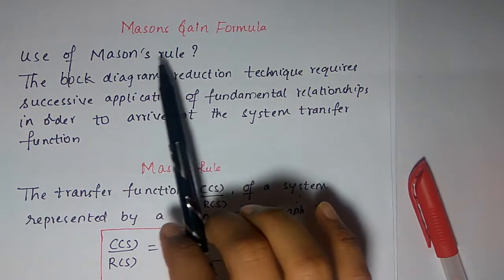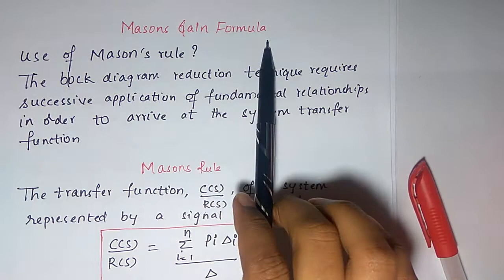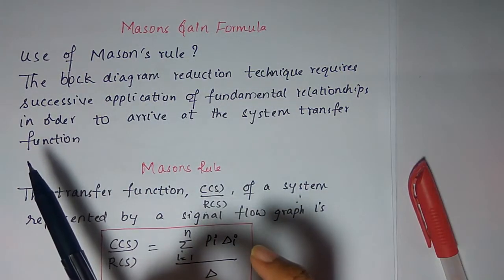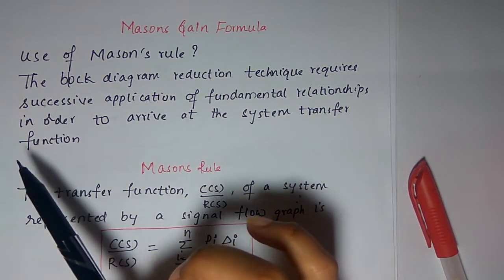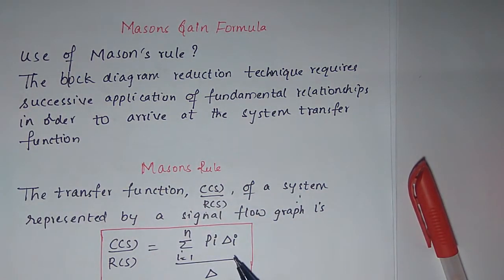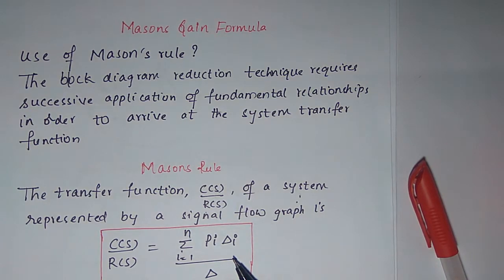Next is Mason's gain formula. The block diagram reduction technique requires successive application of fundamental relationships in order to arrive at the system transfer function. But with the signal flow graph, we can find the transfer function very easily using Mason's gain formula.